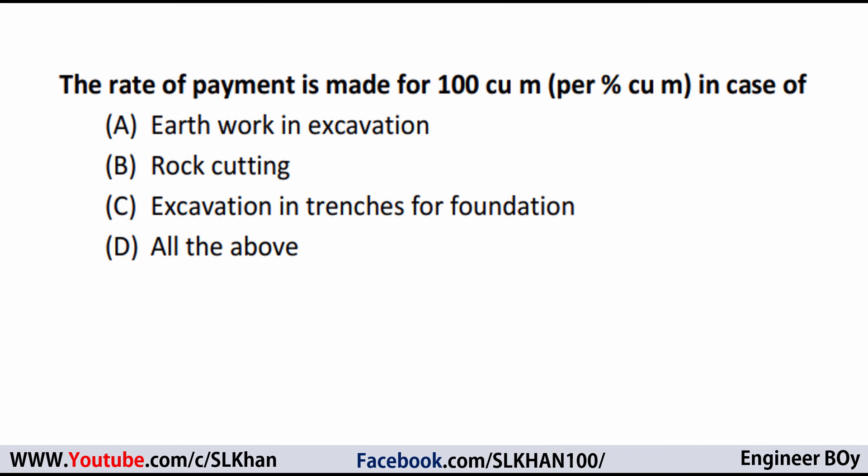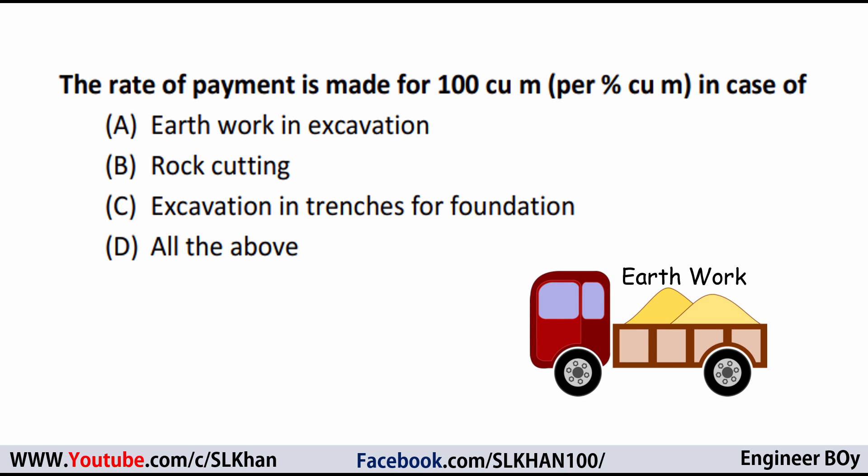The first question: the rate of payment is made for 100 cubic meter in case of which option? Option A is earthwork in excavation. I agree with that because earthwork is always done in cubic meter, and payment is made per 100 cubic meter or maybe 100 CFT. Option A is correct. Rock cutting is also earthwork — that's also correct. Excavation in trenches for foundations is also cutting or earthwork, so option C is also correct. That means all of these — options A, B, C — are talking about earthwork, and earthwork is paid per 100 cubic meter. So I'm happy with option D: all of the above. That's the correct answer.